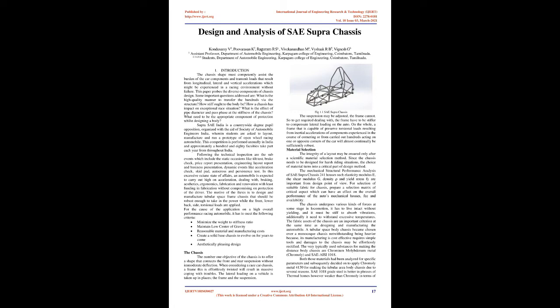Material Selection. The integrity of a design can be ensured only after a scientific material selection method. Since the chassis needs to be designed for harsh riding conditions, the choice of material becomes a critical part of the design process. The structural performance analysis considers elasticity modulus E, shear modulus G, density, and yield stress, which are important from a design point of view.